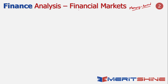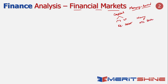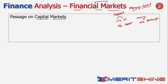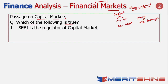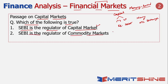The first question we look at is from financial markets — specifically capital markets. There are multiple segments: primary and secondary markets, equity and debt markets, money markets, OTC markets, and exchange-traded markets. One question was a passage on capital markets asking which of the following is true. Options included: SEBI is the regulator of capital markets — which it is; SEBI is a regulator of commodity markets — true, as FMC got merged with SEBI; and RBI is the regulator of non-banking financial companies — also true. The answer was all of these.